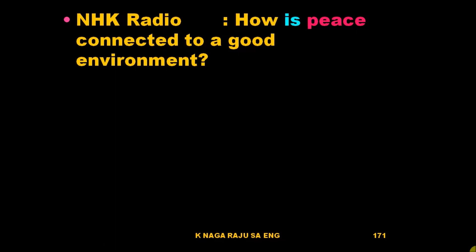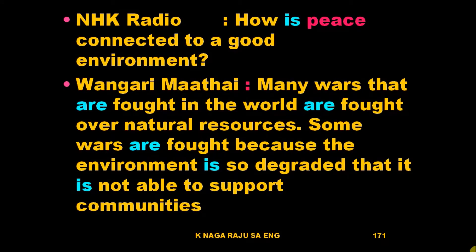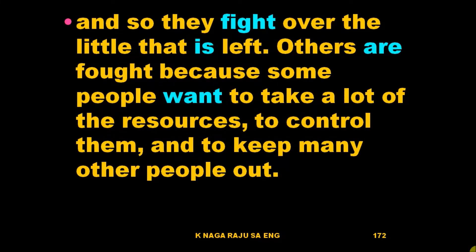Now we get the following conversation and notice how it is reported. In an NHK video, the question is: how is peace connected to a good environment? Vangari Matai answered: 'Many wars that are fought in the world are fought over natural resources. Some wars are fought because the environment is so degraded that it is not able to support families, and so they fight over the little that is left. Others are fought because some people want to take a lot of the resources, to control them, and to keep many other people out.'